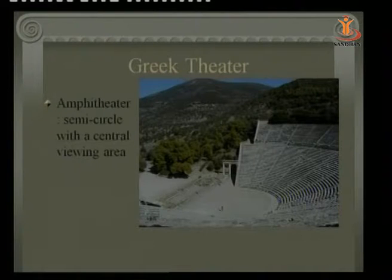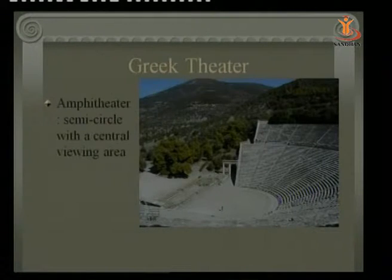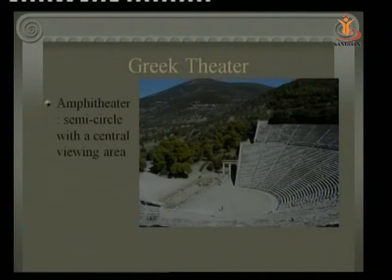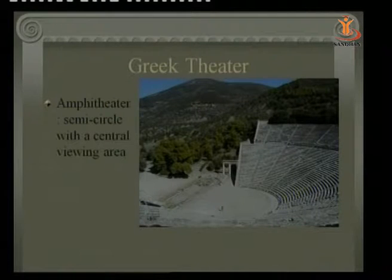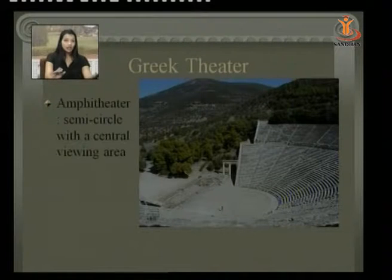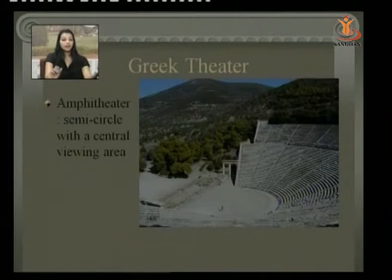It looks somewhere like this — an amphitheater semicircle with a central viewing area. If you look into the picture, you would see it's a semicircle; it's not a complete circle, and that is the place where the audience used to sit. Down on the stage, that is where the drama was enacted.